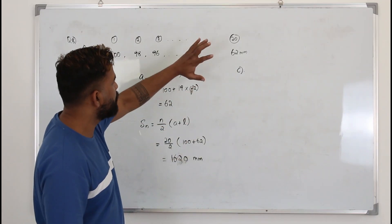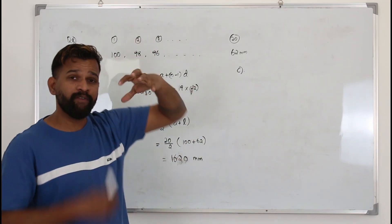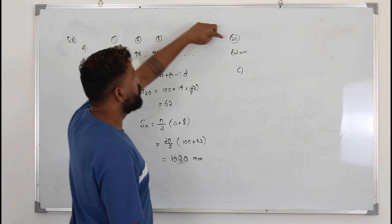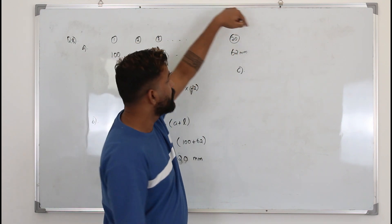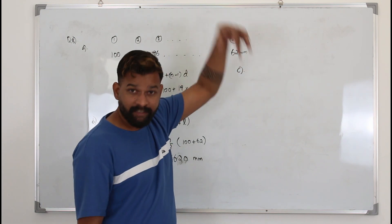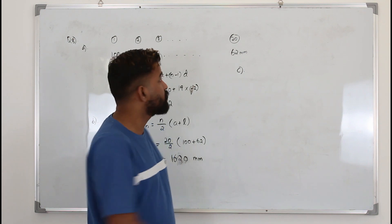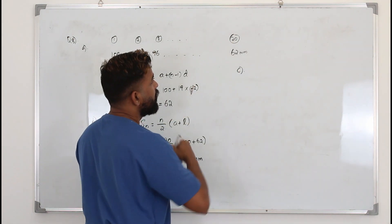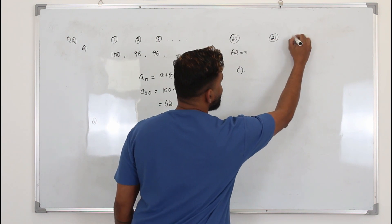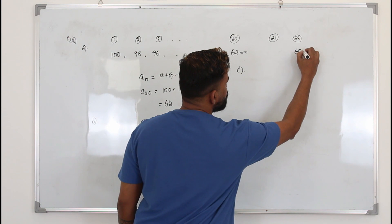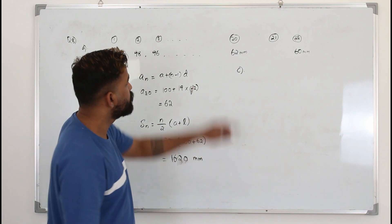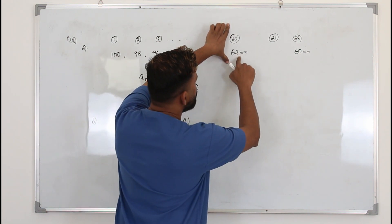In part C, if you read the question carefully, it says after the 20th hit the subsequent distances the post is driven into the ground forms a geometric sequence. With the 22nd hit the post is driven 60 mm into the ground. They want you to find the common ratio.